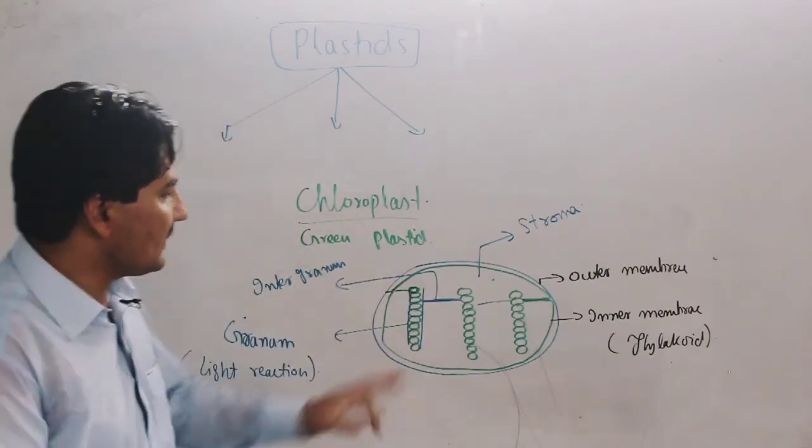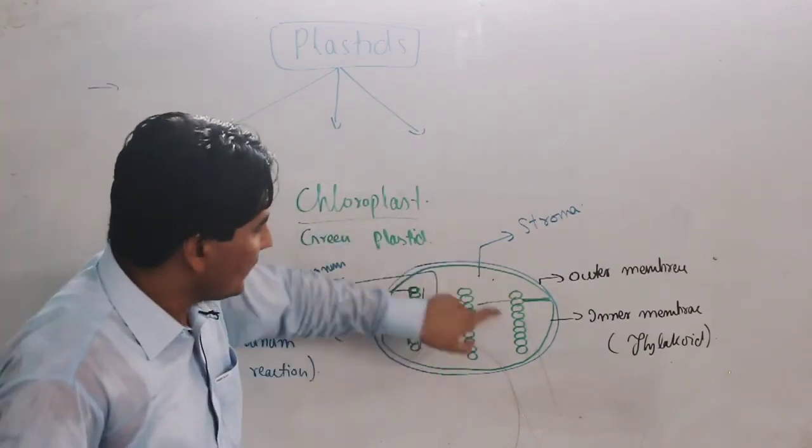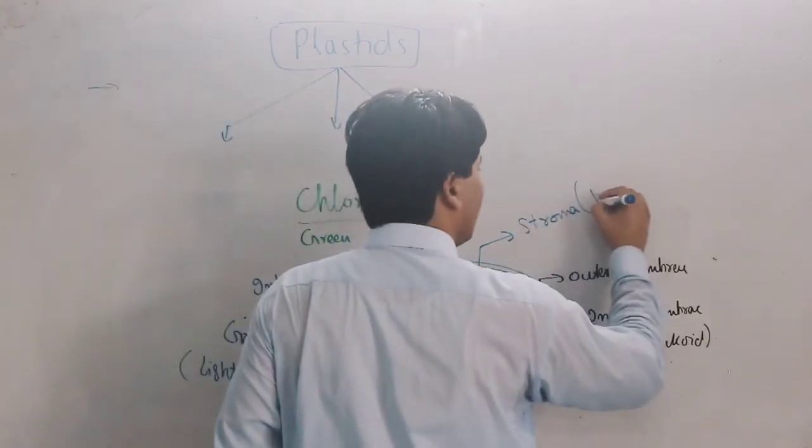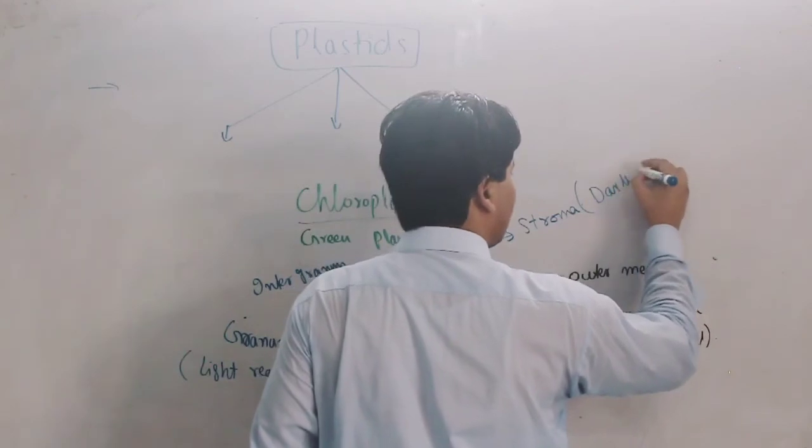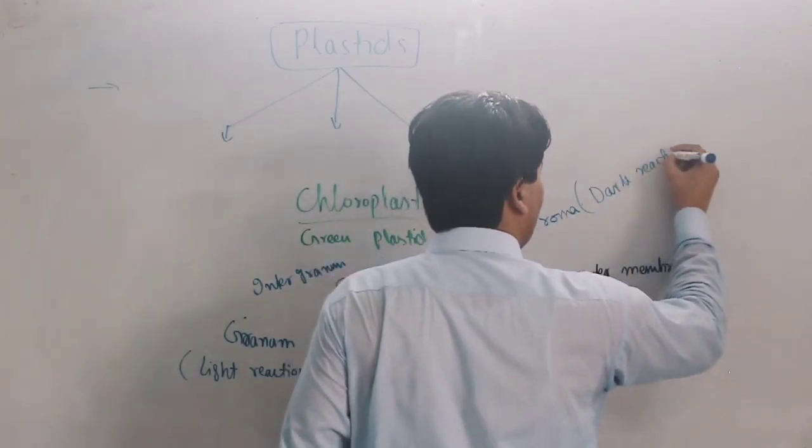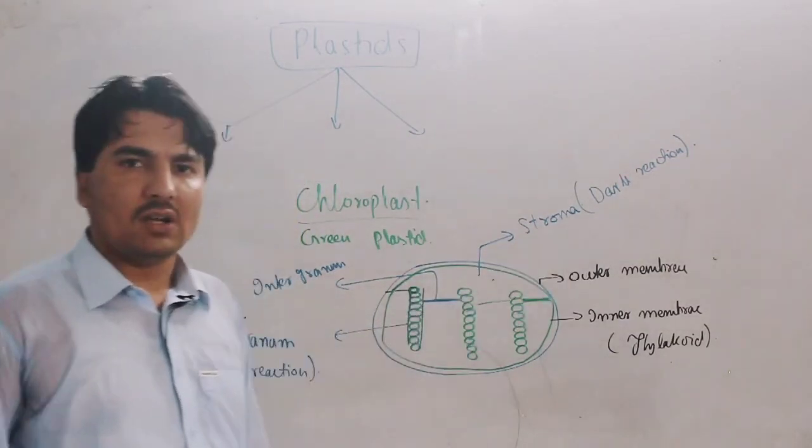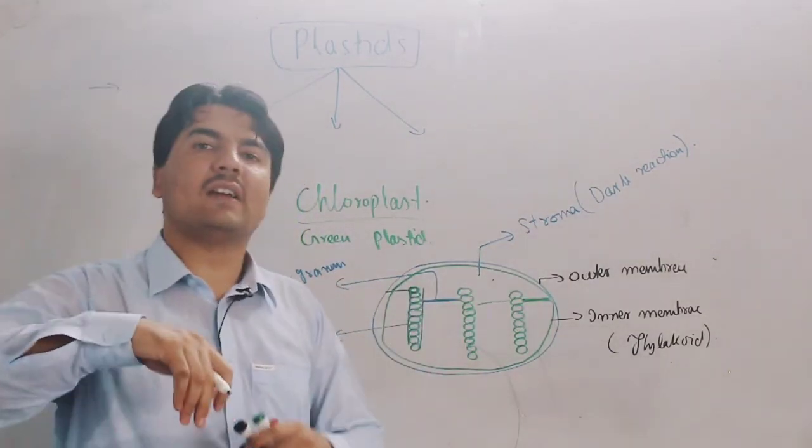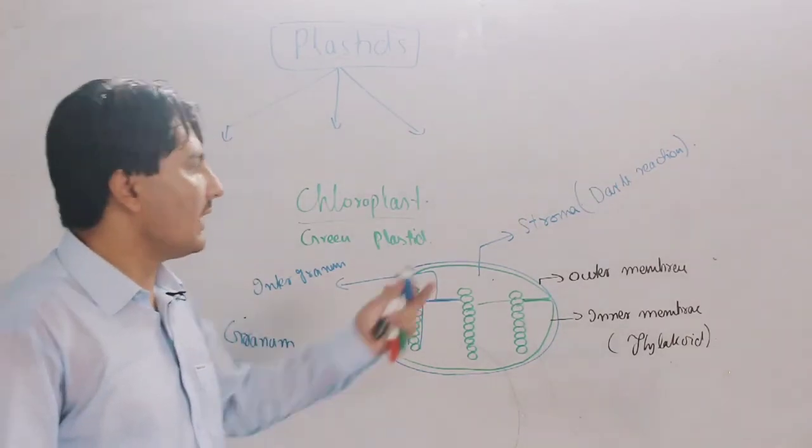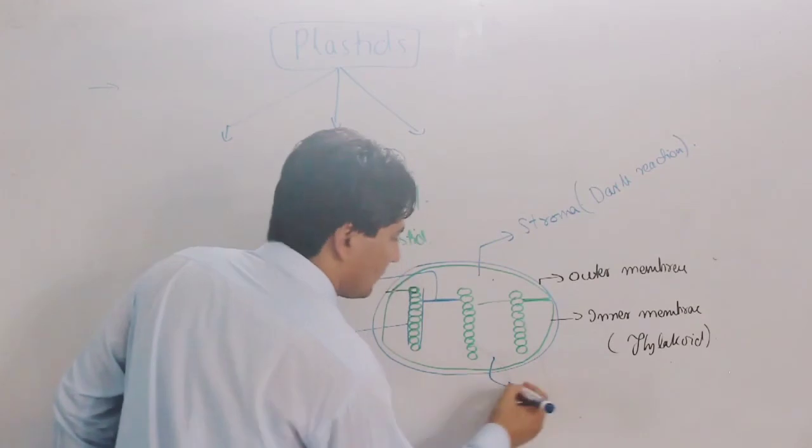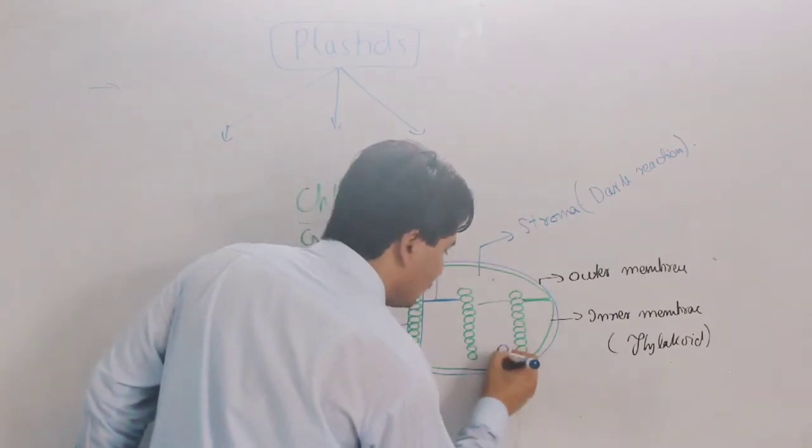Stroma is where dark reaction occurs. It is the site of dark reaction of photosynthesis. Here carbon dioxide fixation occurs - carbon dioxide is fixed here during the dark reaction.